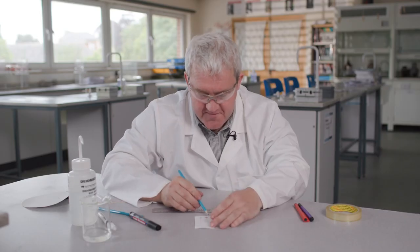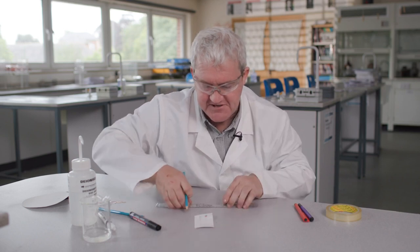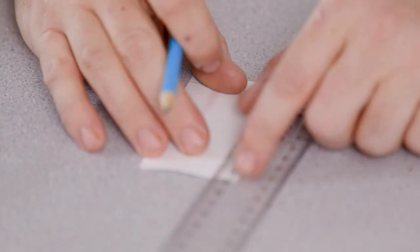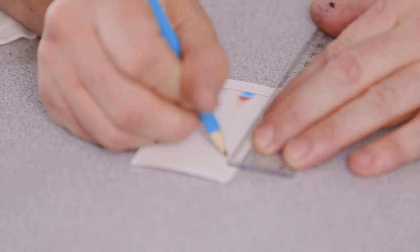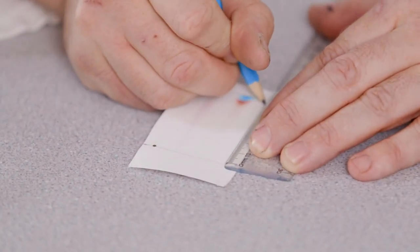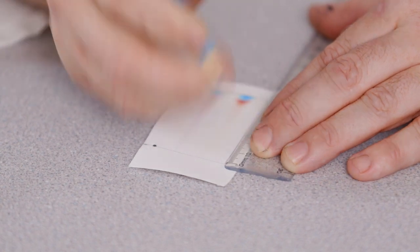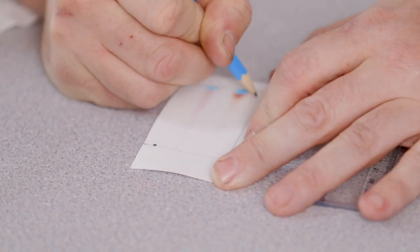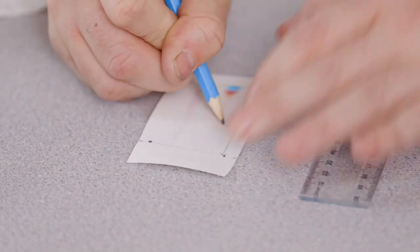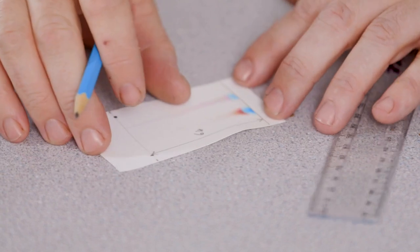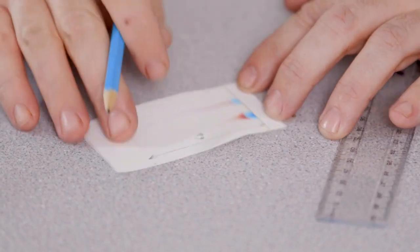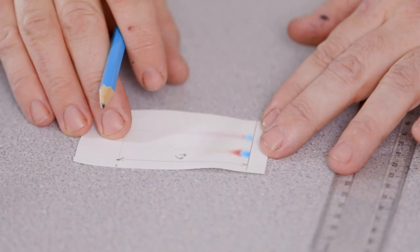So I've now drawn my solvent front, and I can measure this solvent front. Now, the distance of the solvent front from the baseline, it doesn't really matter what units you measure it in, but this is a millimeters ruler, and so this is 64 millimeters. Okay, so we call this the solvent front, a distance of 64 millimeters.